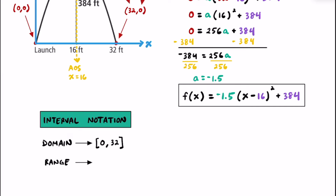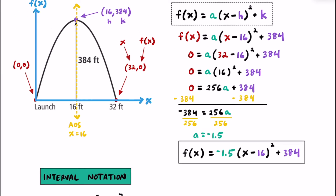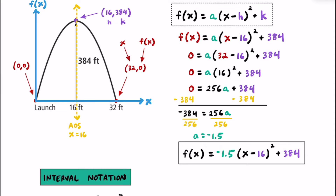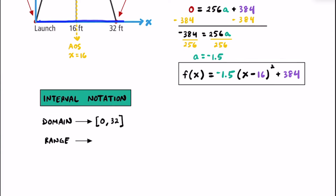What about the range of this function? The range is going to be the lowest point to the highest point. The lowest point is 0 because the rocket can't go below the ground, and the highest point is 384 at the vertex. So we write the range as [0, 384], including both endpoints since the rocket does reach both heights.